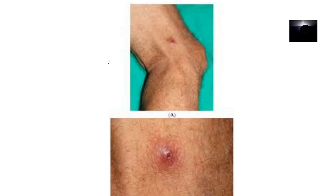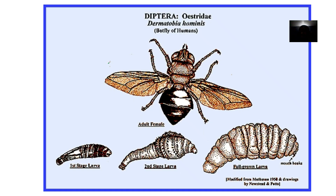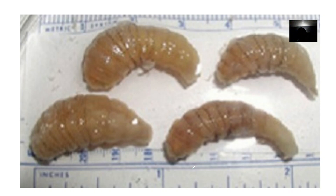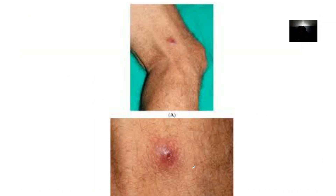This invasion is by the larval stages of some flies. The adult fly has a first stage larva, a second stage larva, and a full-grown larva. The larval stages can affect humans — that's what is known as myiasis.